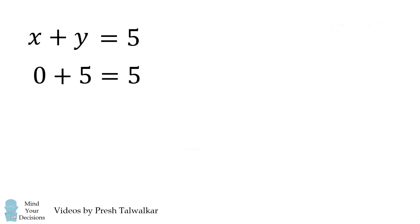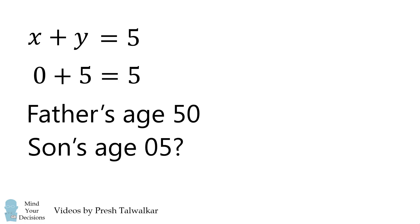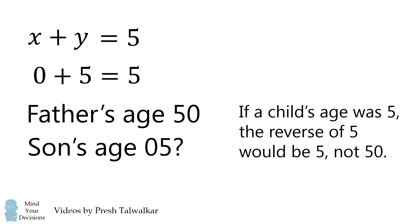If we had 0 plus 5 is equal to 5, that would mean the father's age is 50, and the son's age would have to be the reverse, which is 05. Well, this solution doesn't make a lot of sense. If the child's age was 5, the reverse of 5 would be 5, and not 50. So we'll eliminate this possibility.